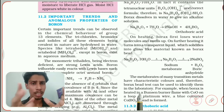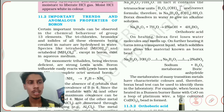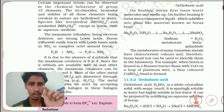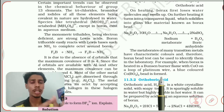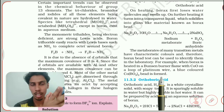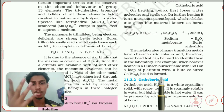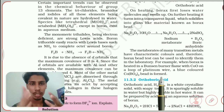Metaborates of many transition metals have characteristic colors, and therefore the borax bead test can be used to identify them in the laboratory. The color depends on which transition metal is involved — different metals give different colors. For example, when borax is heated in a Bunsen burner flame with cobalt oxide (CoO) on a loop of platinum wire, a blue-colored cobalt metaborate (Co(BO₂)₂) bead is formed. Always remember this involves transition elements, not alkali or alkaline earth metals, because transition metals have the unique property of giving different colors.